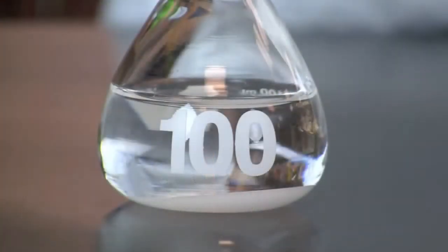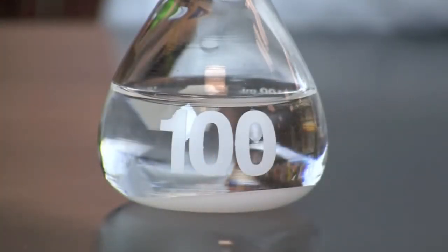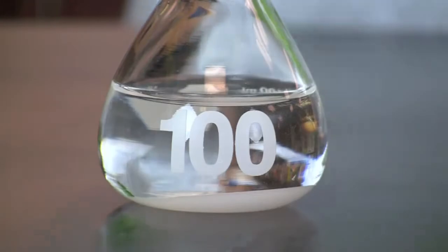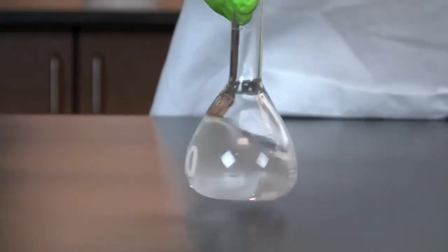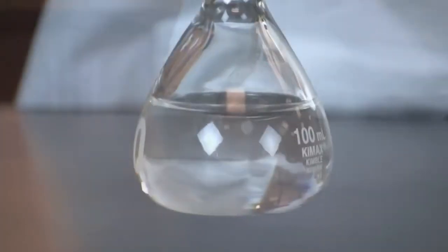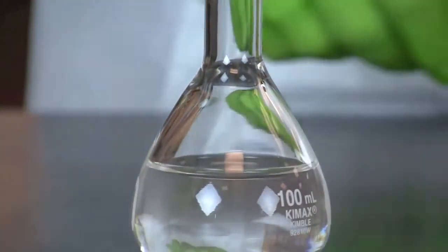Fill the flask approximately half full with distilled water. Swirl to dissolve the sodium chloride crystals. Continue swirling until the solution is clear, indicating that all of the sodium chloride crystals have dissolved.